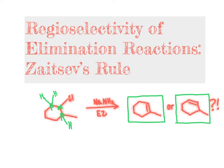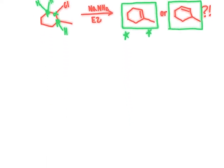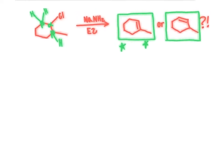The spoiler alert here is that the product of this reaction is primarily going to correspond to the structure on the left. We want to understand how we go about predicting that the structure on the left is the preferred structure, and why. We're going to go through the mechanism for this exact problem to reinforce the E2 reaction mechanism, and develop our understanding of Zaitsev's rule, which is the rule we use to predict that the alkene on the left is preferred over the one on the right.